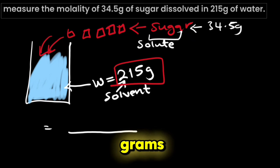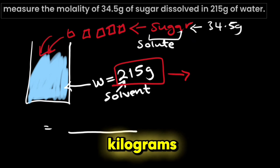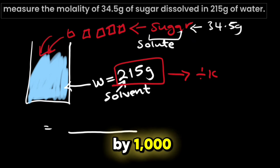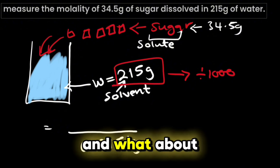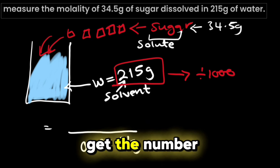We have the water in grams so let us change it into kilograms by dividing it by a thousand. This will give us 0.215 kilogram. Now what about the solute? How can we get the number of moles?